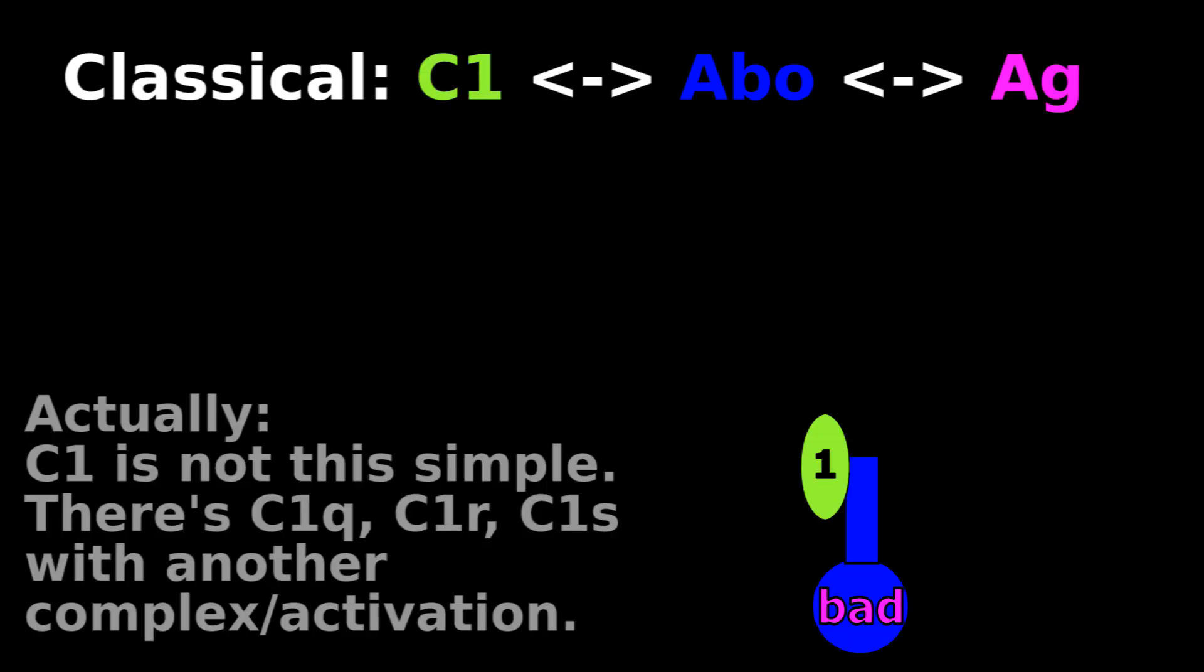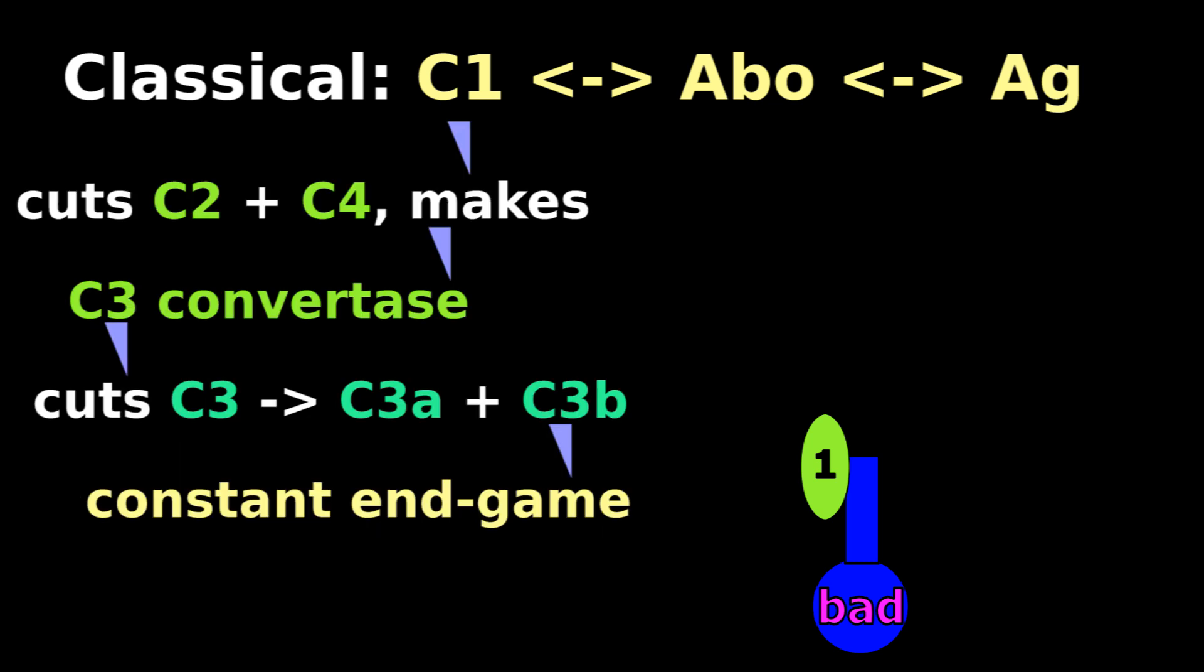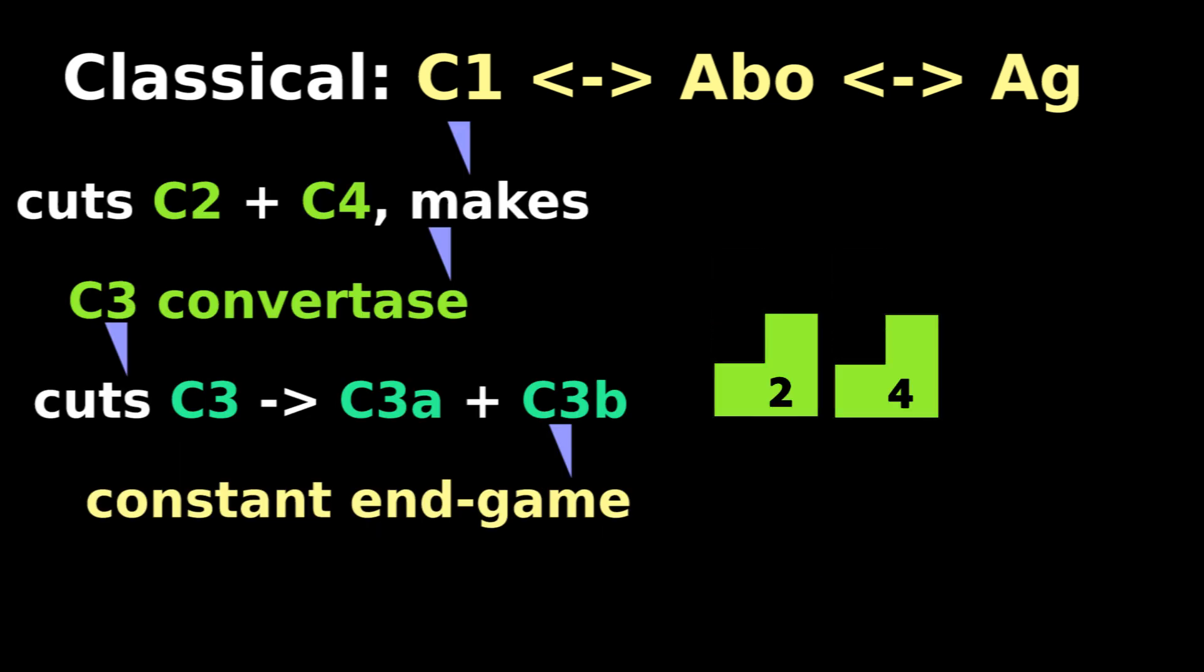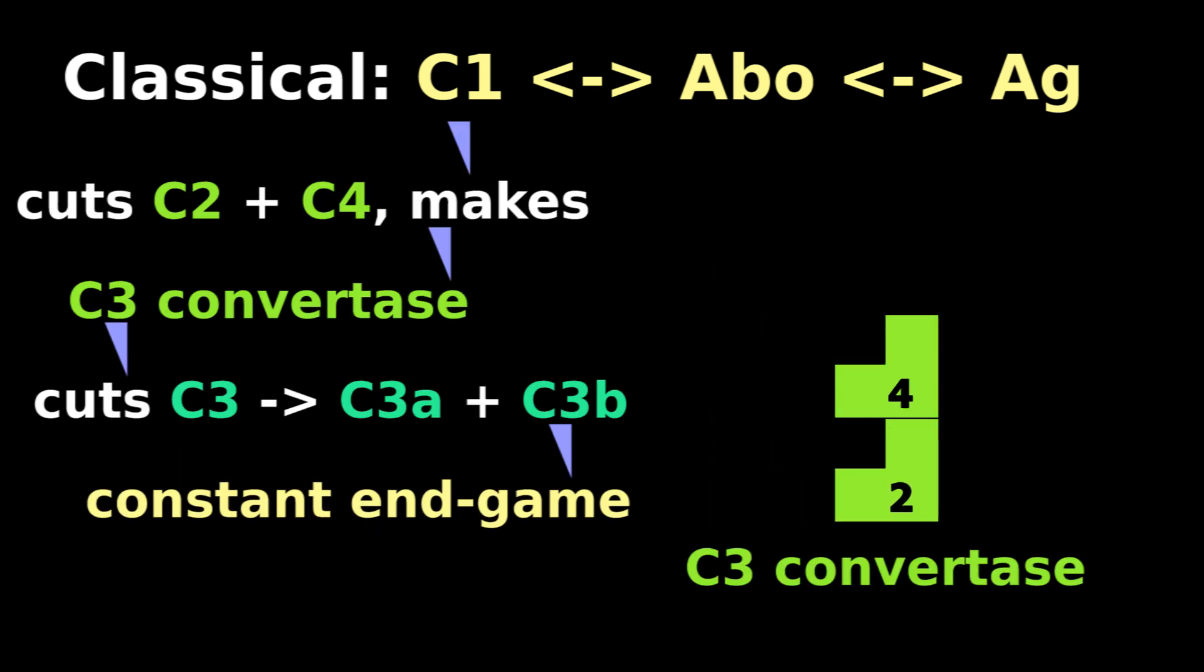Classically, an antibody binds to an antigen, and the antibody also binds to C1. C1 to antibody to antigen splits C2 and C4, and parts of C2 and C4 combine to form C3 convertase. This C3 convertase is what cuts C3 into C3A and C3B, starting the constant endgame.